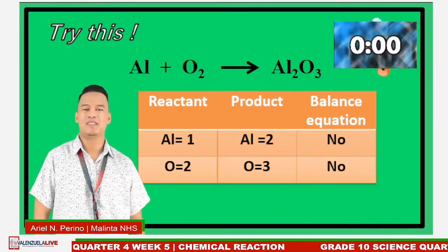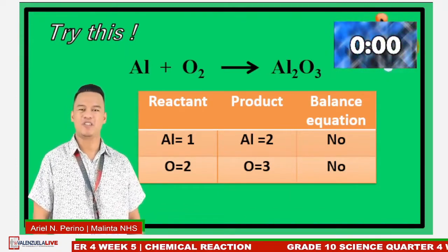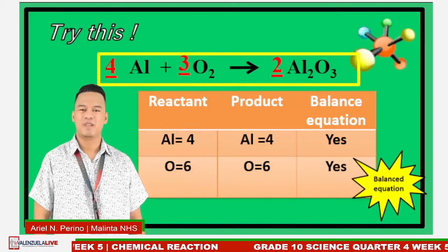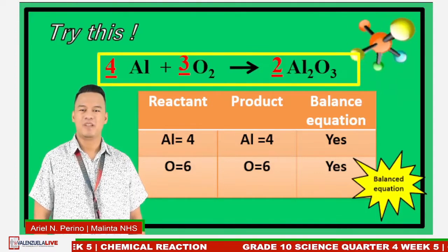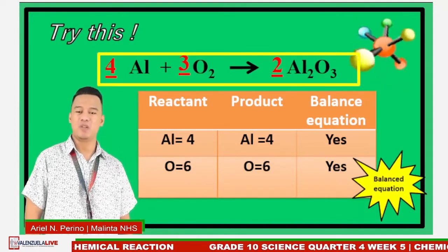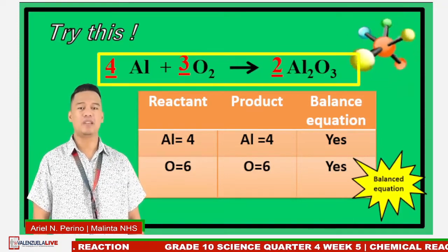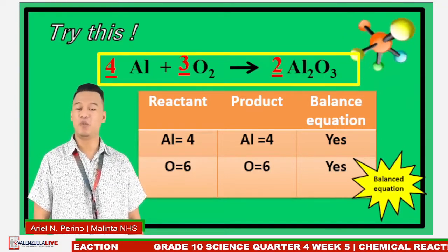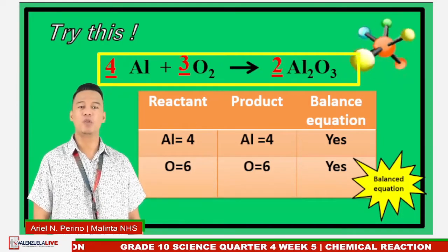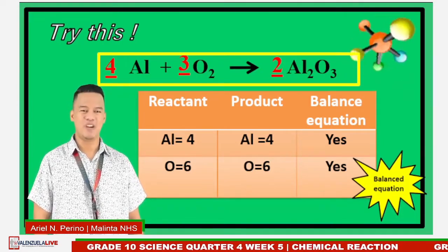Now let's see your answers. The balanced equation is: 4 aluminum reacts with 3 oxygen to form 2 aluminum oxide. Very good, learners!